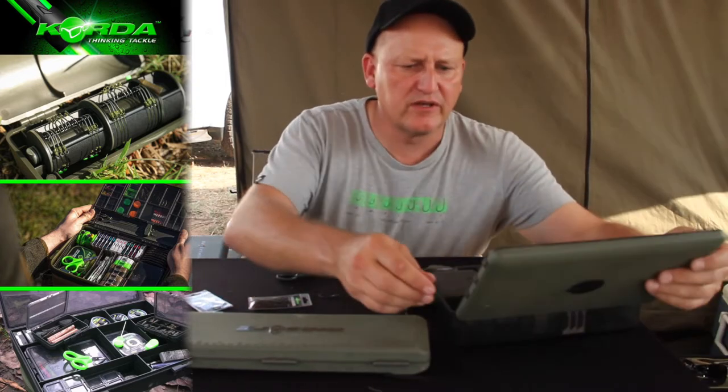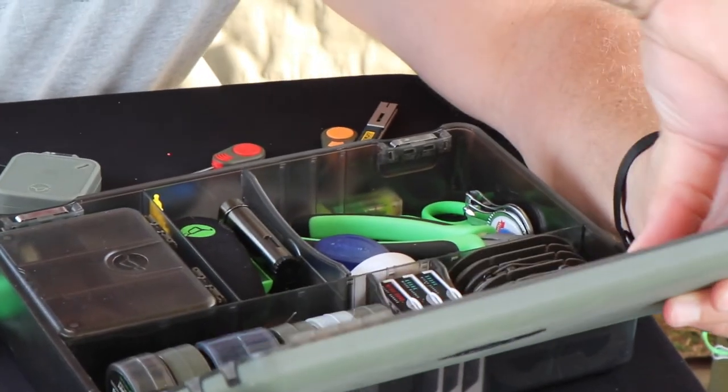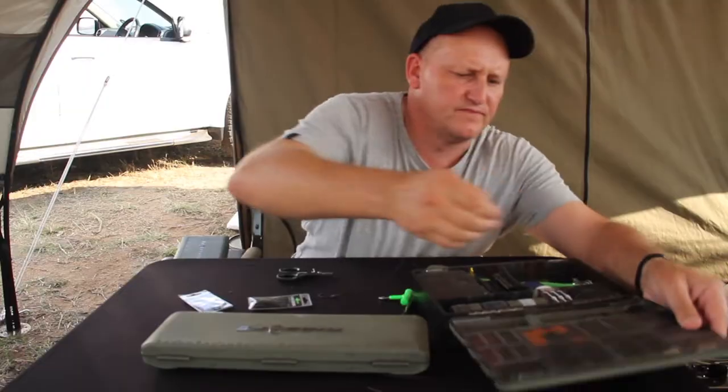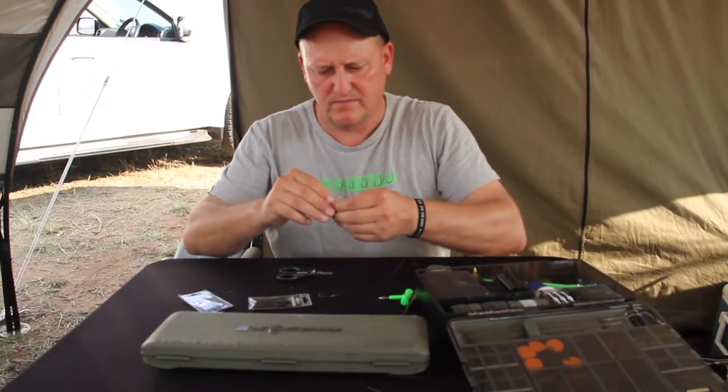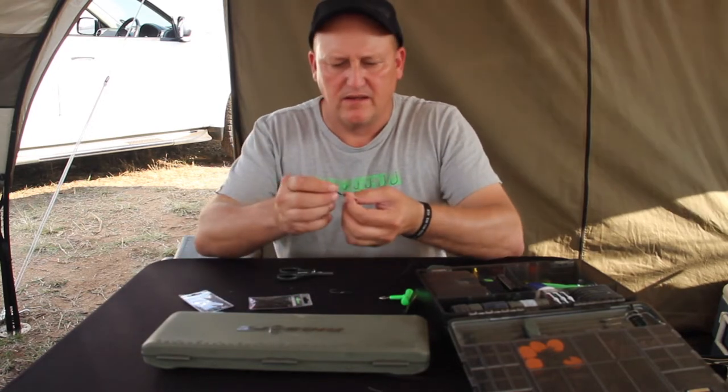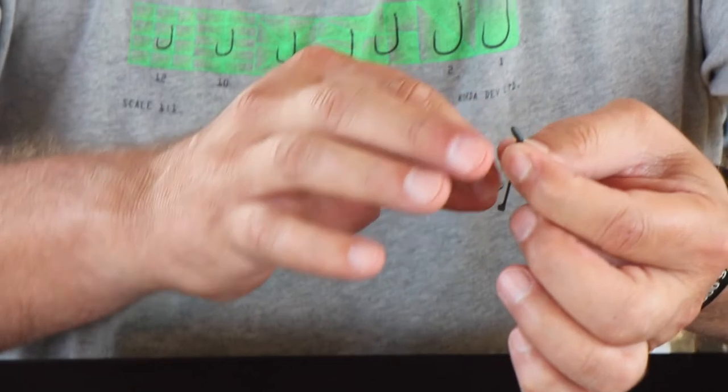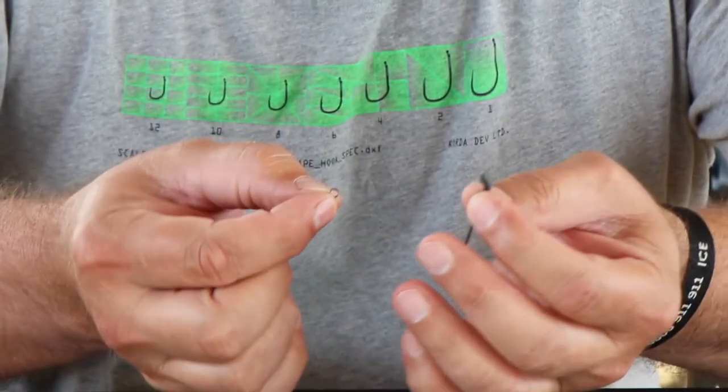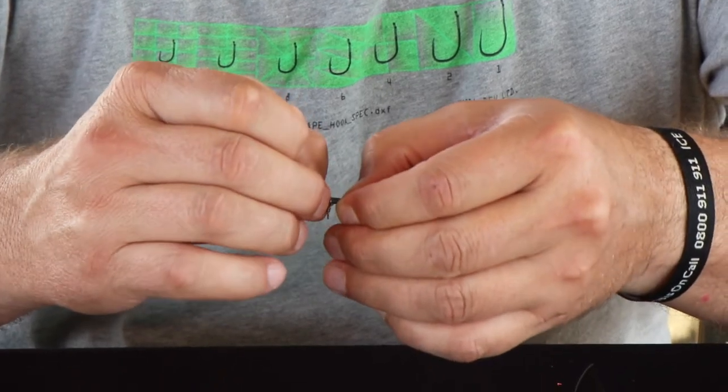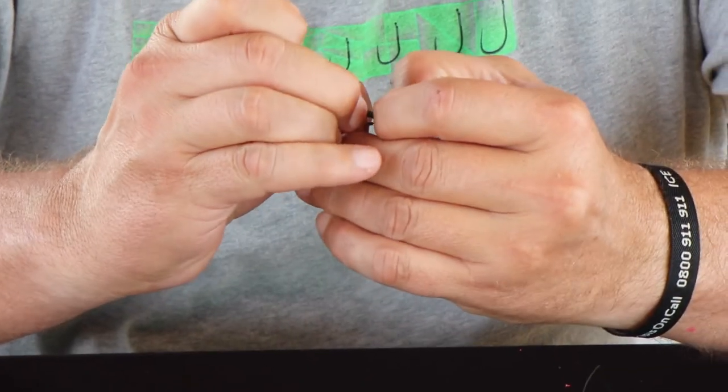For this purpose I'm going to be using a micro ring swivel. Let me just pull it out here from my tackle box. And fitting it is really easy. Take the sharp end of the D-rig kicker and push the swivel through the ring part. Push it in.